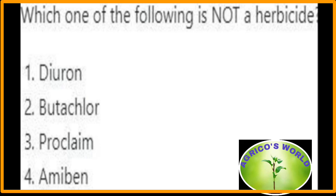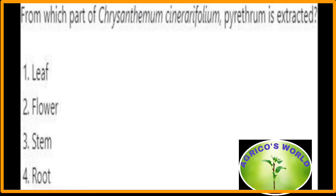Which of the following is not a herbicide? Proclaim is not a herbicide, whereas diuron, butachlor, and amiben are all herbicides. Pyrethrum is extracted from the flowers of Chrysanthemum cinerariaefolium.